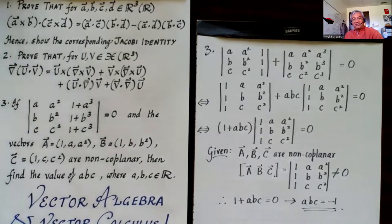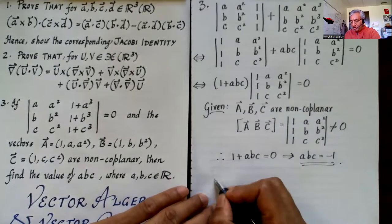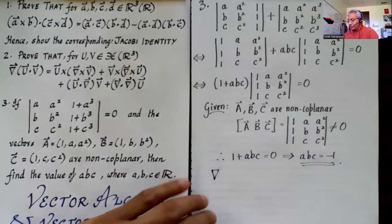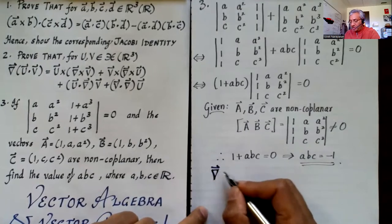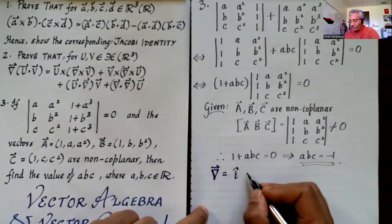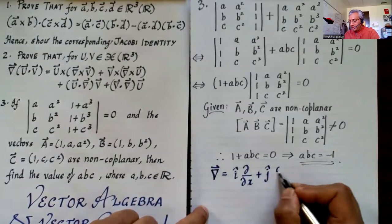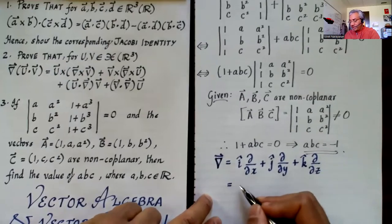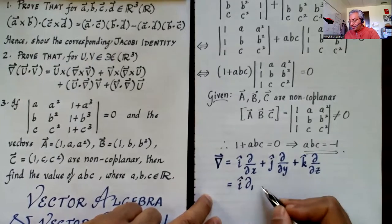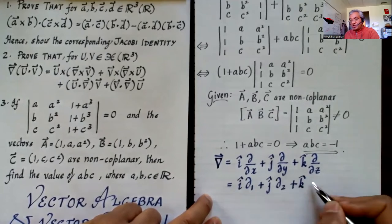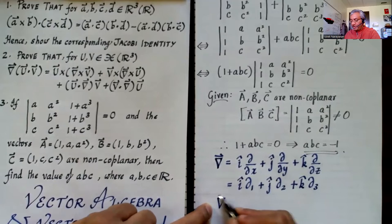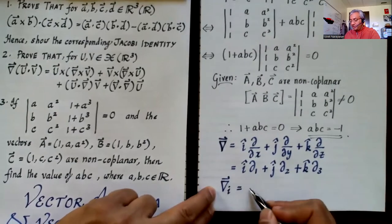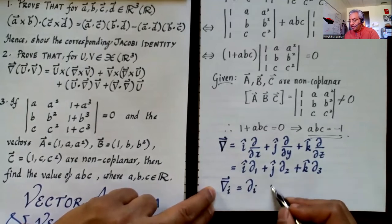That's the end of this video. I hope you learned a bit about vector algebra and some vector calculus operations. As a final note, the gradient operator ∇ (nabla) is defined as i-hat ∂/∂x + j-hat ∂/∂y + k-hat ∂/∂z, abbreviated as i-hat ∂_1 + j-hat ∂_2 + k-hat ∂_3, so the i-th component of the gradient is simply ∂_i.